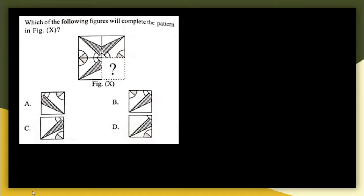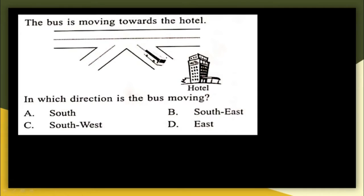Next question: which figure will complete the pattern in figure X? Drawing and completing the pattern, options B, C, and D are wrong because their lines go in the wrong direction — they cannot be placed to complete the figure. The correct answer is option A.